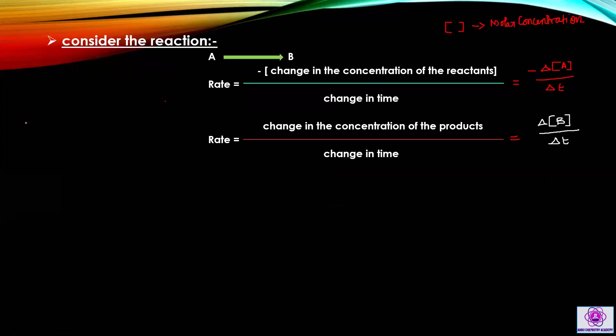Next, let's talk about a general reaction: A gives B. A is the reactant, B is the product. Now, in the reaction, the reaction has a rate. Rate is equal to, in the numerator, minus the change in the concentration of reactant; denominator, change in time.